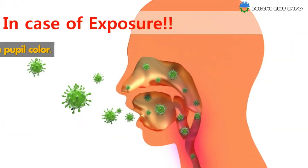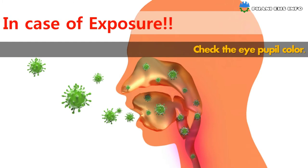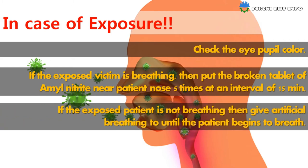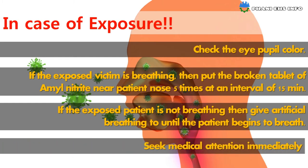In case of exposure, check the eye pupil color. If the exposure victim is breathing, put a broken tablet of amyl nitrite near the patient's nose five times at an interval of 15 minutes. If the patient is not breathing, give artificial breathing until the patient begins to breathe, and seek medical attention immediately.